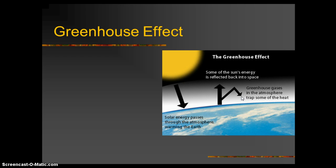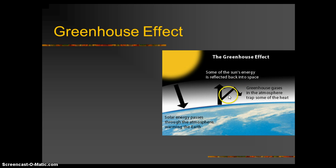Greenhouse gases have the ability to capture that energy and convert it into heat. Nitrogen gas, N2, makes up 80% of our atmosphere but is not a greenhouse gas — energy goes right through it. But CO2 takes in that heat energy, absorbs it, and re-radiates it as heat in all directions, and sometimes that direction is aimed back down to Earth.